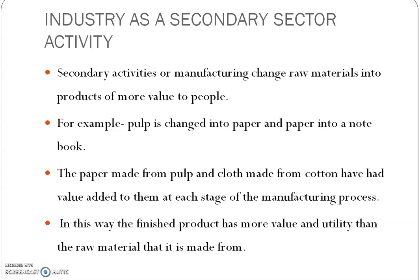For example, pulp is changed into paper and paper into a notebook. We get pulp from the wood of trees. When we extract the pulp, it is taken to the factory and changed into paper. This paper, which is the finished product, is again made into several other usable products — for example, a notebook, a diary, or a book. Another example: cotton cloth made from the cotton plant.